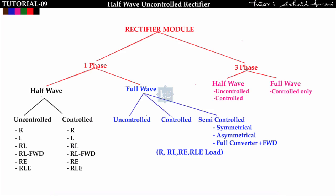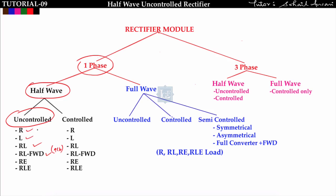In the previous lecture we covered the single phase half wave uncontrolled rectifier with RL load and RL with freewheeling diode — that is lecture 9B. For R load and L load we saw lecture 9A. In this lecture we will see RE type of load, that is the battery charging type of load, and RLE type of load in single phase half wave uncontrolled — this is lecture 9C.